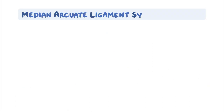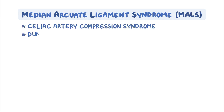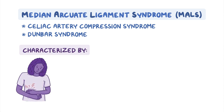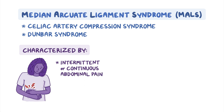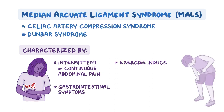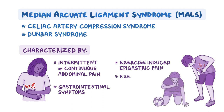Median arcuate ligament syndrome, or MALS, also known as celiac artery compression syndrome or Dunbar syndrome, is a rare disorder characterized by varying degrees of intermittent or continuous abdominal pain, gastrointestinal symptoms, and/or exercise-induced epigastric pain or exercise intolerance.